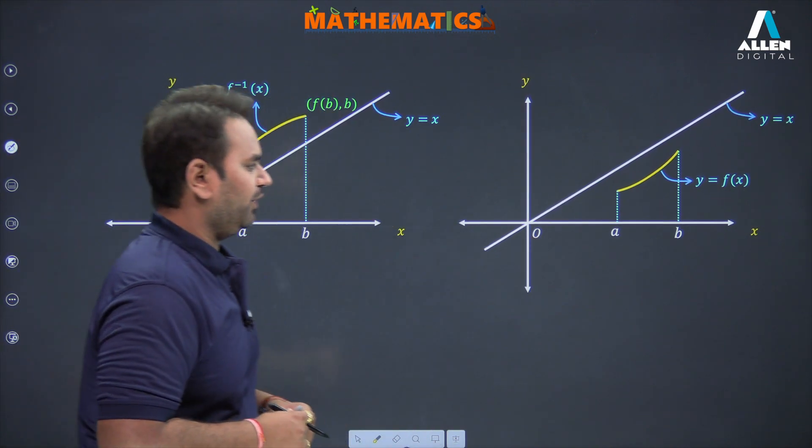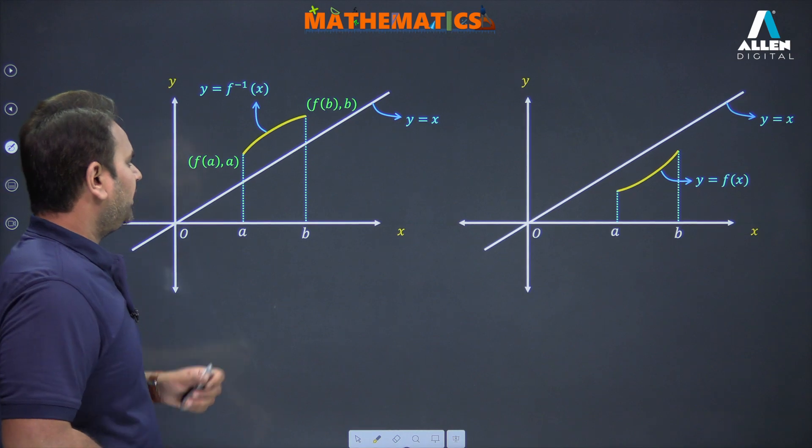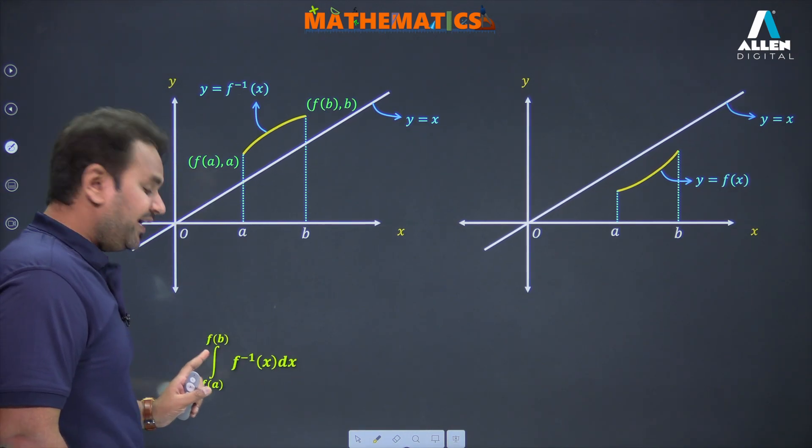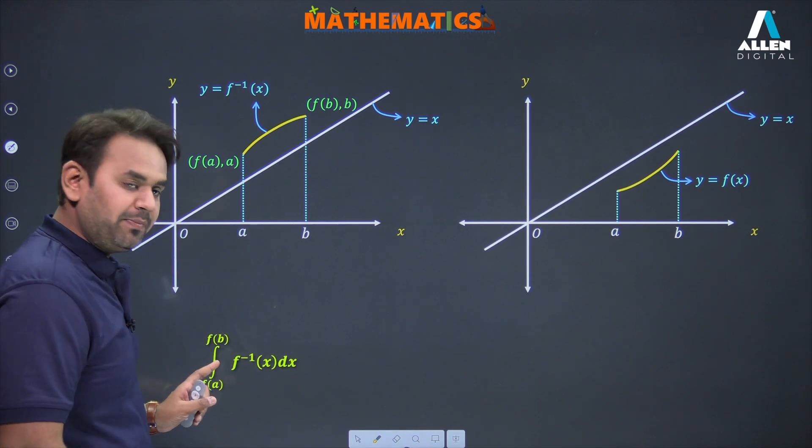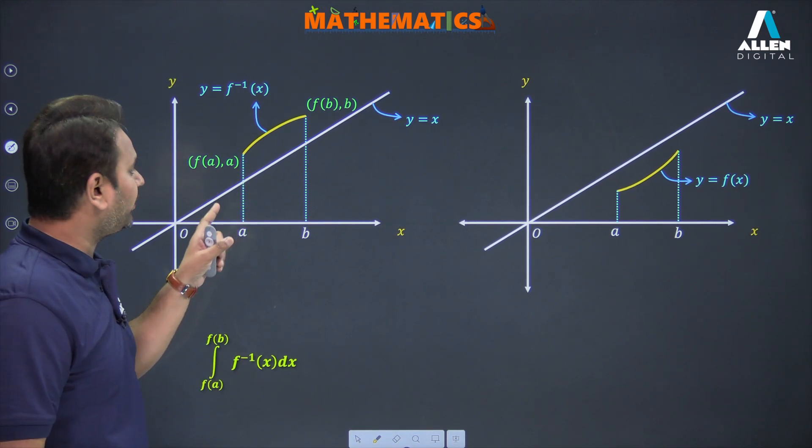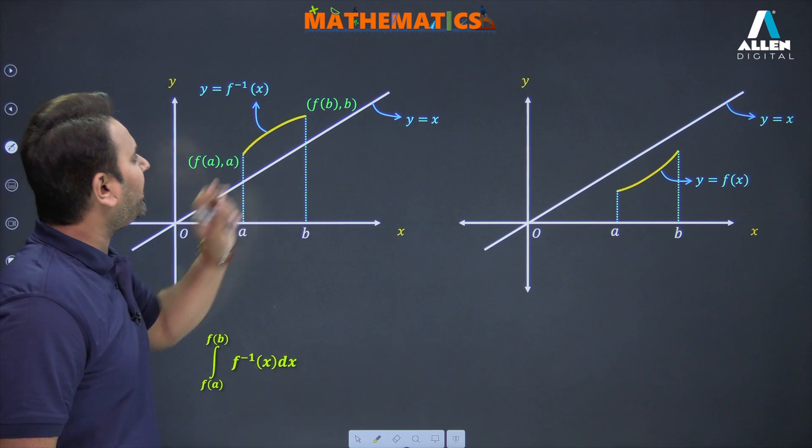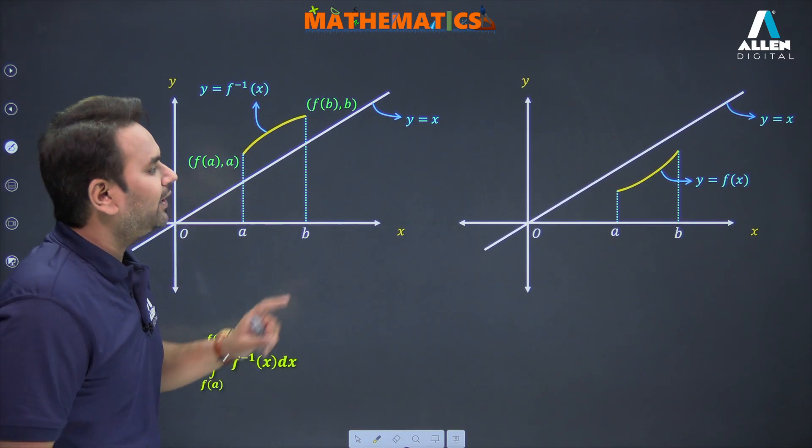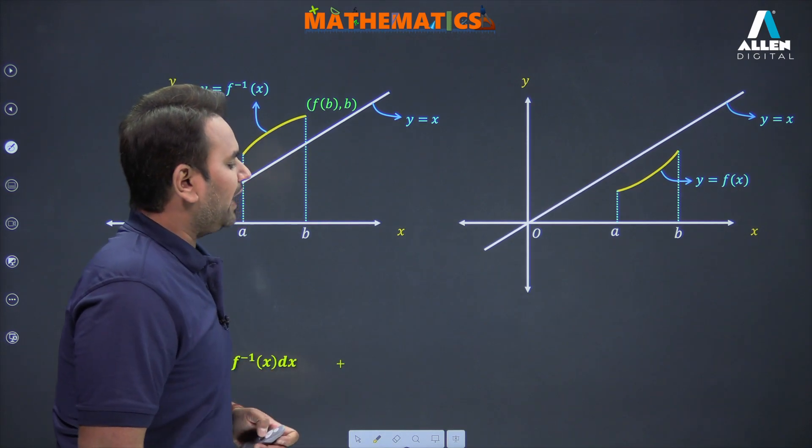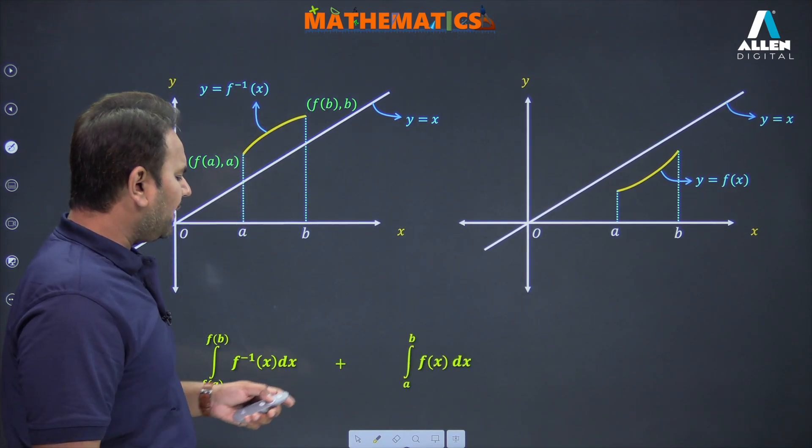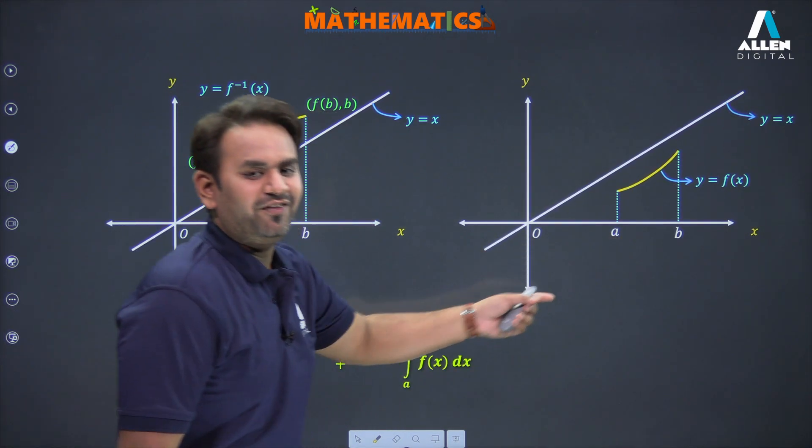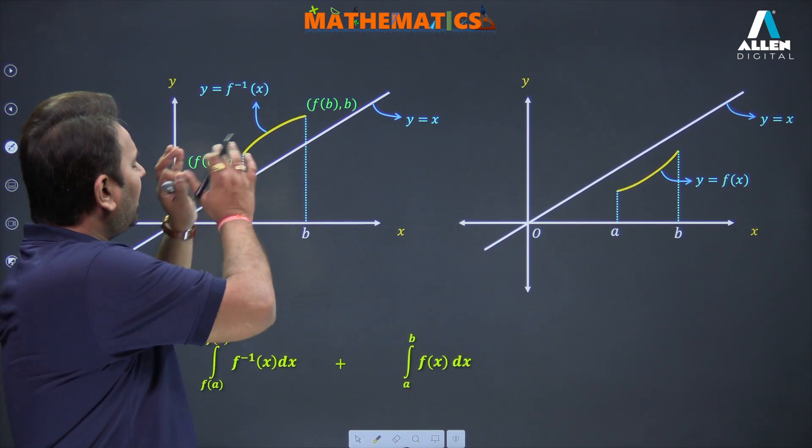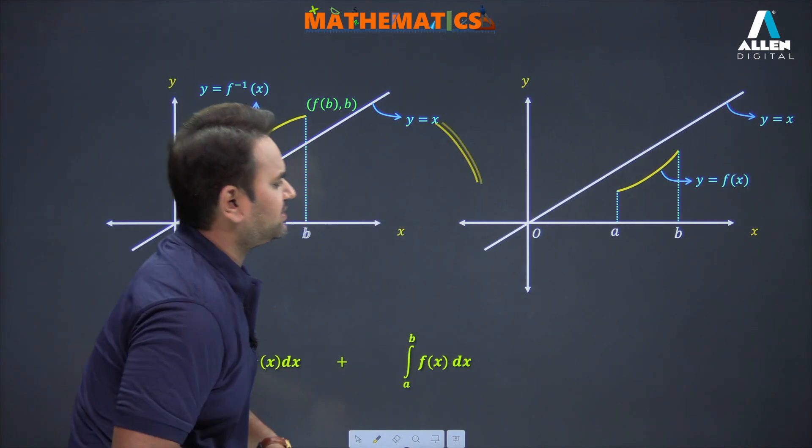Before the final answer, let's see graphically. This is the graph of f(x) and this is the graph of f inverse x. Both are reflections of each other about y equals x. These two graphs are split into different parts: this is your f inverse x graph and this is your f(x) graph. We've broken it into two parts. Here if I talk about the integral from f(a) to f(b) of f inverse x dx, if you integrate this, it will give you an algebraic area here.